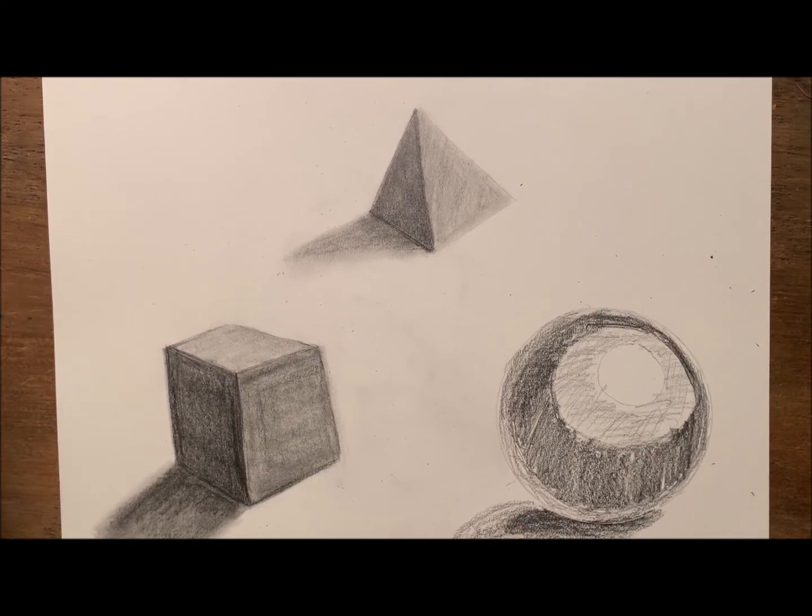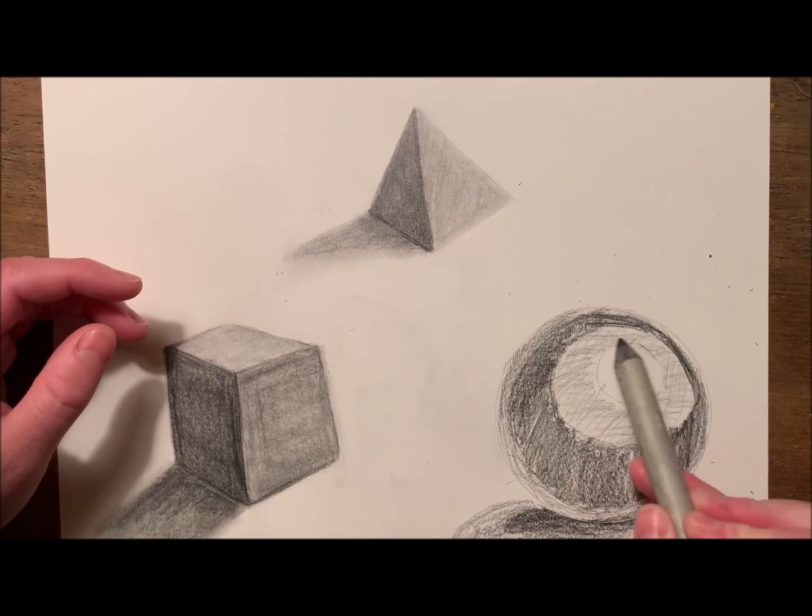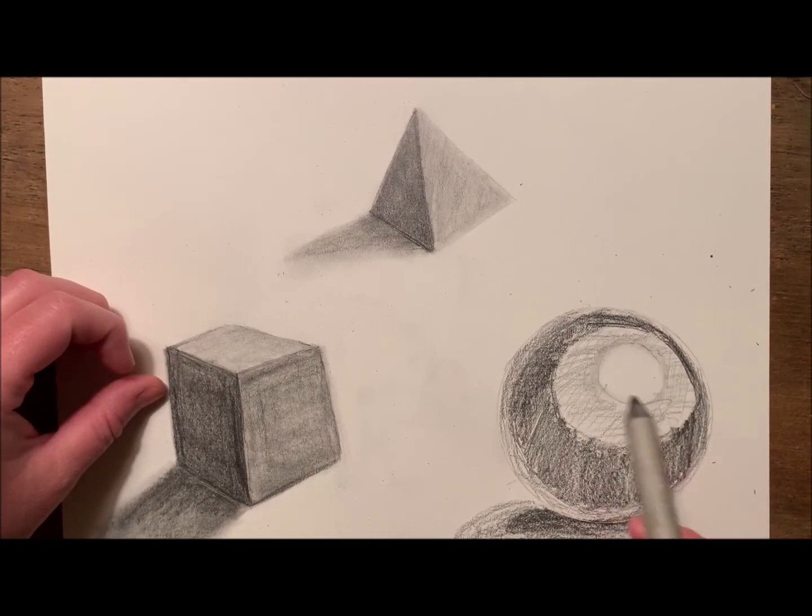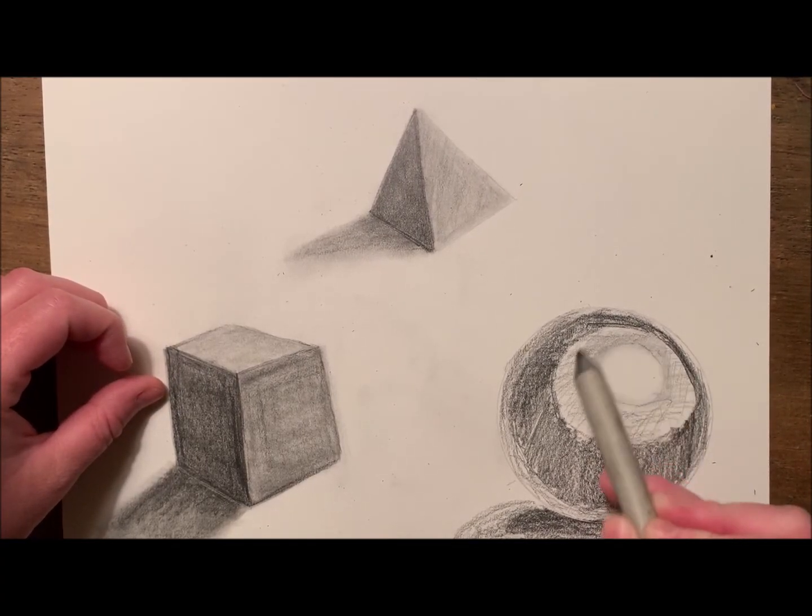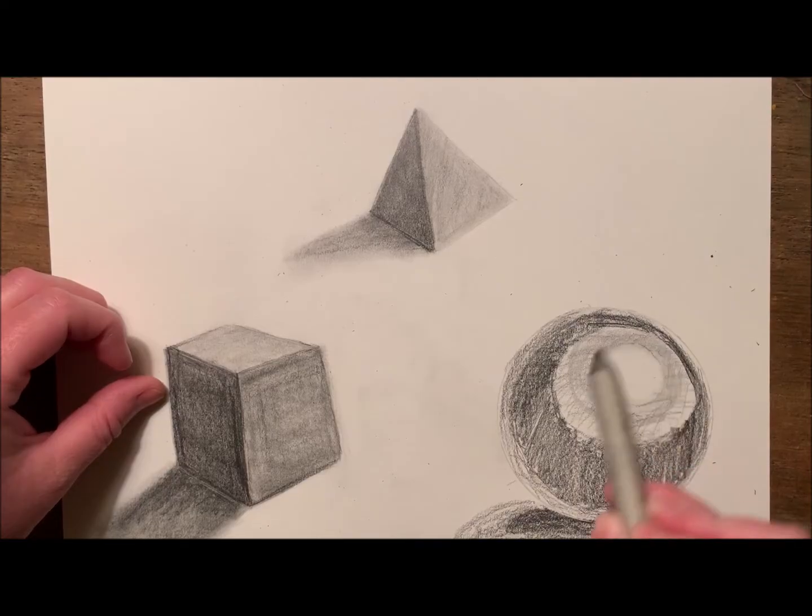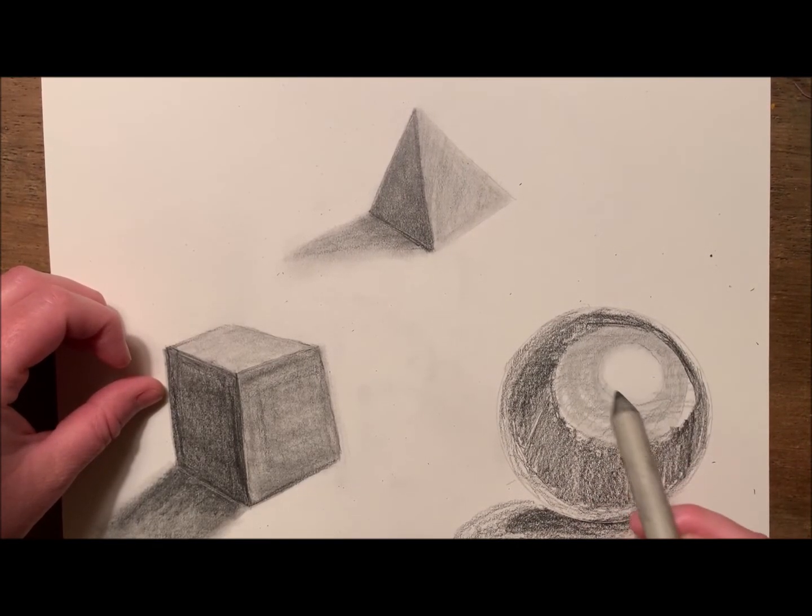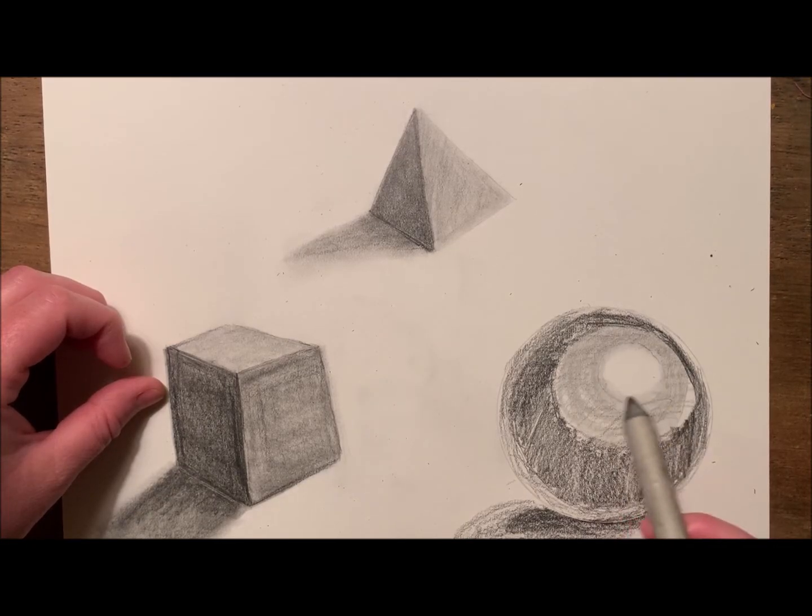After filling in my shadow, I'm ready to blend. Now using my blending stick or your finger, I'm going to gently start in a circular pattern, going around that white part, being very careful not to blend into it. I'm then going to gently smudge the edge of that so it looks almost blurry, and then work my way out.